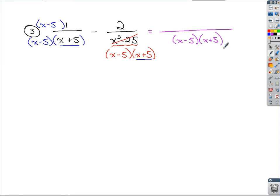Got my least common denominator. If I look at the adjustments that need to be made in the numerator, first numerator here you've got 1, which I would distribute to that x minus 5.